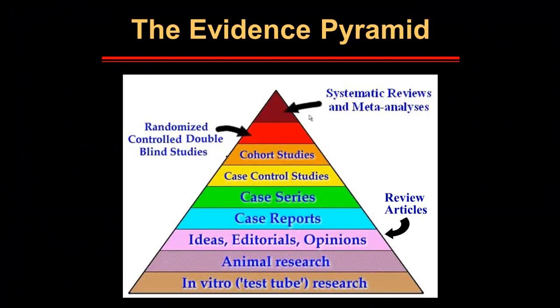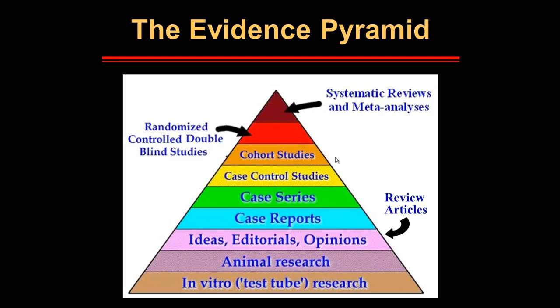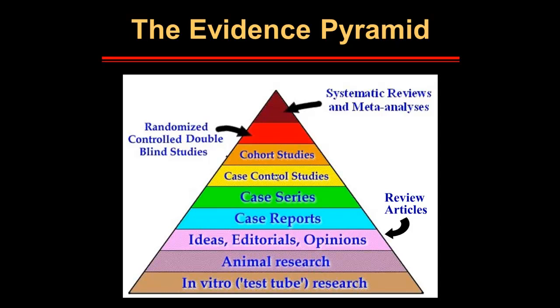We still have 59 records to look through. What we'd like to find is the highest level of evidence available to answer our clinical question. Since this is a treatment type question, we may find a meta-analysis or a systematic review, or more likely we'll find a randomized controlled trial. If there are no randomized controlled trials, then we may have to work our way down the evidence pyramid. For very rare diseases, you most likely will only find case series or case reports.